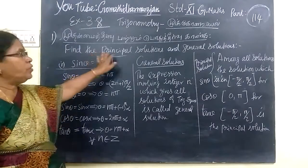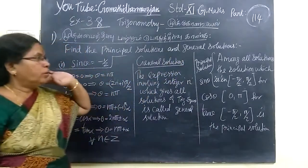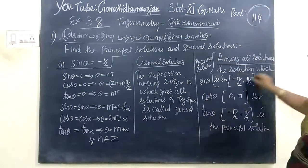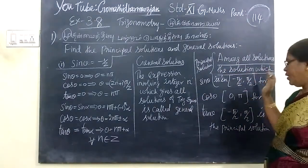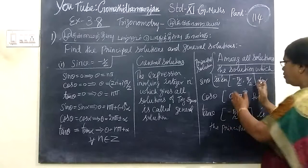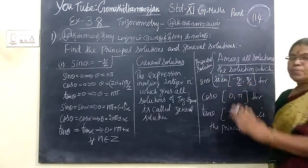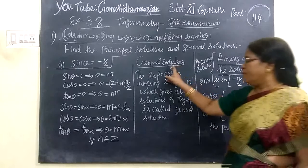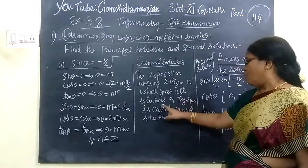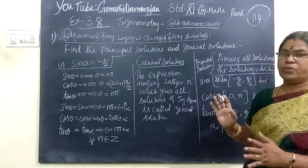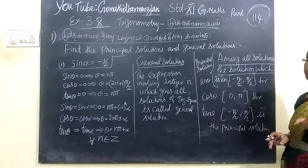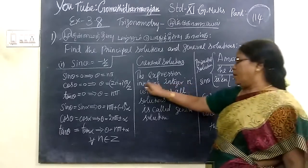This is the principal solution and the general solution. The principal solution is the solution which lies in a specific range. For the general solution, the expression involves integer N — it gives all solutions of the trigonometric equation. The principal solution is the first solution, and the general solution covers all values.